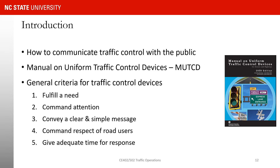I want to talk about the general criteria for traffic control devices — when do we use them and how do we use them. First and most important: they need to fulfill a need. We don't place a traffic control device somewhere that there is no need for it. For example, if you don't want to stop traffic, you don't put a stop sign or a traffic light. If there is a need, then we will have traffic control devices.